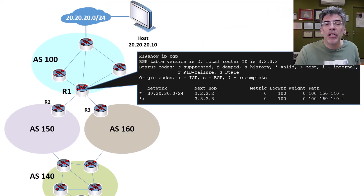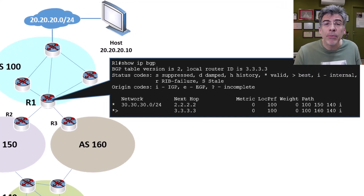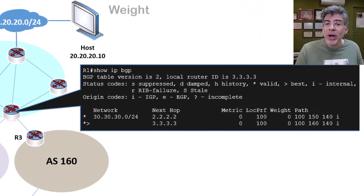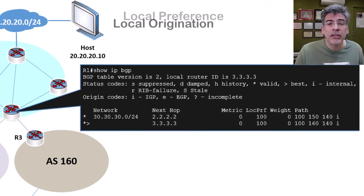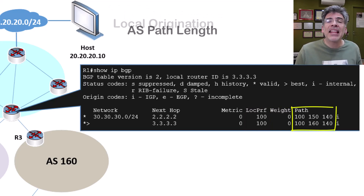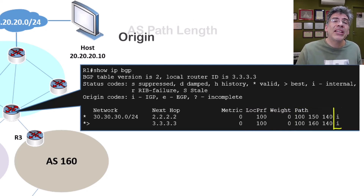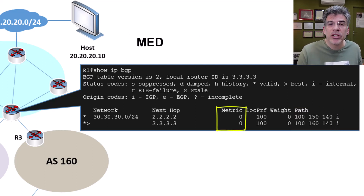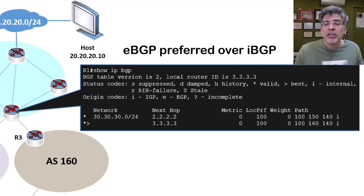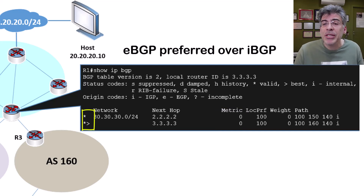Here is the BGP table of R1. Let's go through these attributes quickly to see how the oldest route becomes the tiebreaker. The weight here is the same, and so is the local preference. Neither route was originated locally, and the AS path length is the same. We also see that the origin code is the same. MED has no bearing here since we're talking about EBGP learned routes. And remember, BGP prefers EBGP routes over IBGP routes, but both of these are EBGP routes, so we don't prefer one over the other.